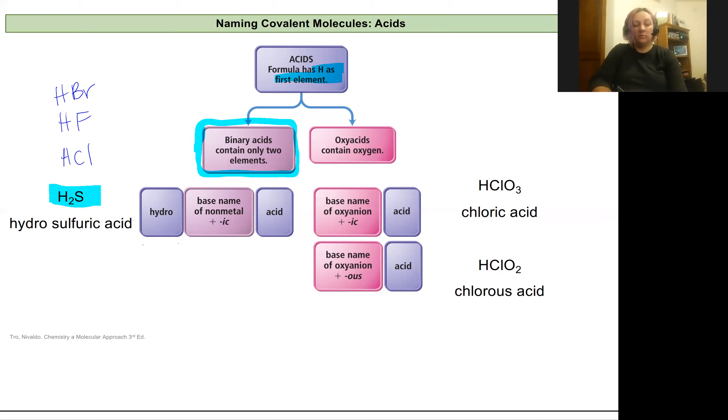For these, we're going to have hydro be the beginning of our name, followed by the base name of the element, and we're going to give it an IC ending and then follow it with acid. Here I have hydrogen and sulfur. I'm going to focus on the non-hydrogen element and name based on that, so that's going to be sulfur. What I'm going to do to that name from my periodic table is I'm going to add a hydro at the beginning. I'm going to add the IC ending, and then I'm going to put acid at the very end. What I love about the naming conventions around acid is they always say acid at the end to be, so you're really sure it's an acid, be careful. So we'd have hydrosulfuric acid.